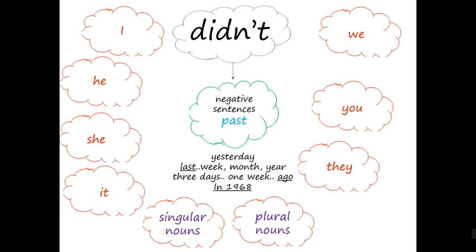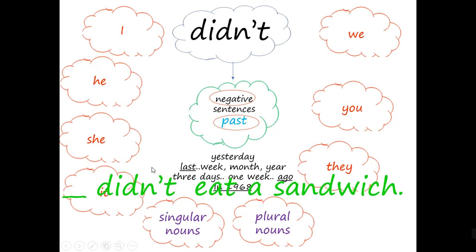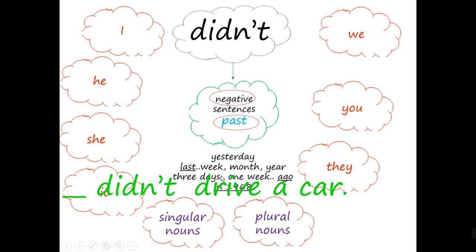And the same one but in the past — "didn't." It's exactly the same, but instead of "don't" or "doesn't" we use "didn't," and here any pronoun or any noun can be used. We check the past time words to know the sentence is in past. For example: I didn't eat a sandwich yesterday, she didn't eat a sandwich last week, my mother didn't drive a car three days ago, you didn't drink milk in 2001.